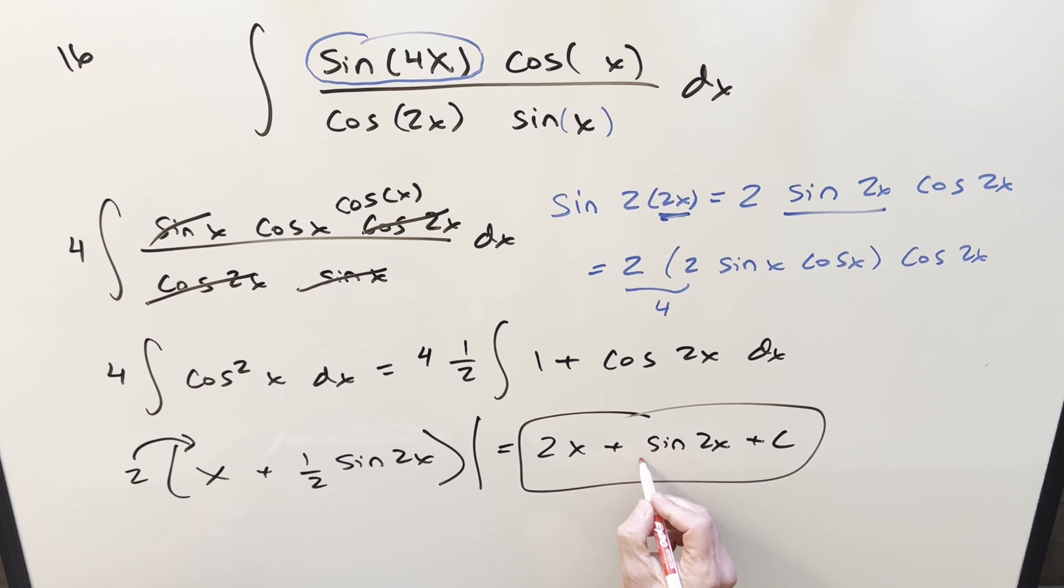If you like, you could use the double angle formula again on this. Although from the original problem, it doesn't really help anything. But if you did it, you'd have another 2. We could kind of factor the 2s out and write it as x plus sine x cos x add a plus c. And that's it.